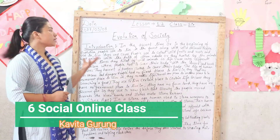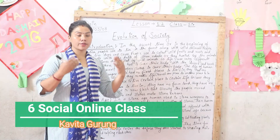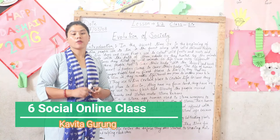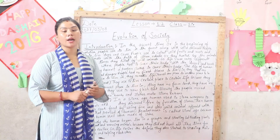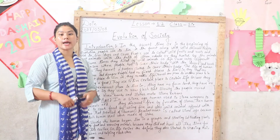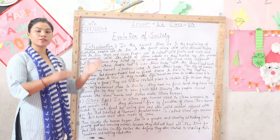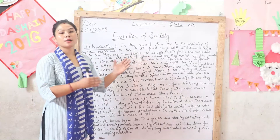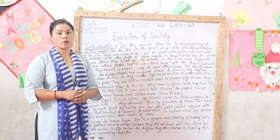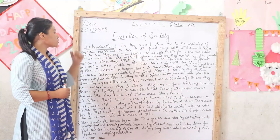How did society evolve? Today we are living a proper life — we communicate, we eat cooked food, we wear nice clothes. But in ancient times, life was not like this. So I will introduce how society evolved, how the evolution of society formed.